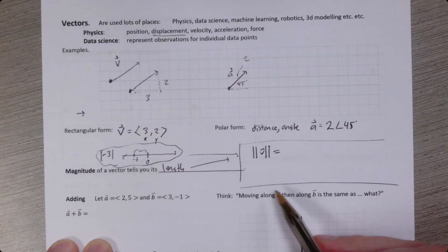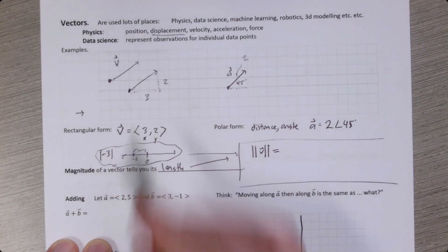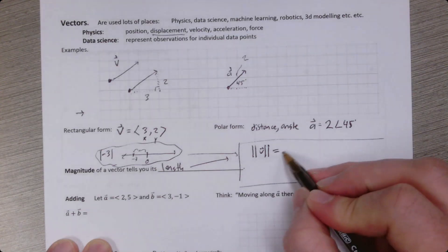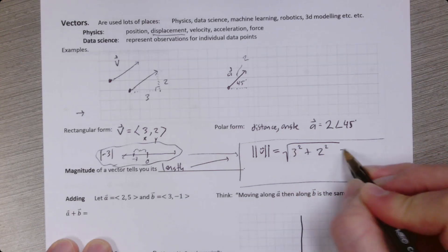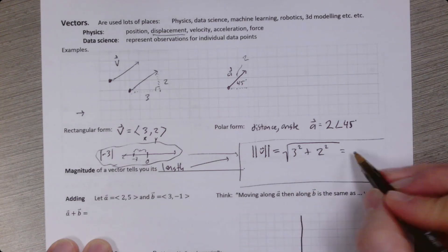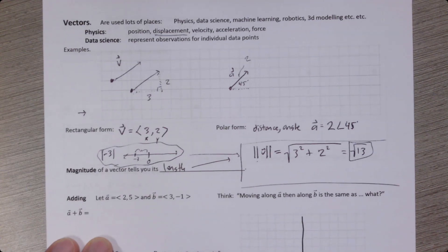Okay, so if magnitude is a length, how do we calculate the length? Well, you might notice that the length of this vector is the same as the hypotenuse of that right triangle. So you can just use the Pythagorean theorem. That's it. So it'll be three squared plus two squared. So let's see, nine plus four is 13. So root 13. So that would be the magnitude. And again, we'll use magnitudes in a lot of different contexts.